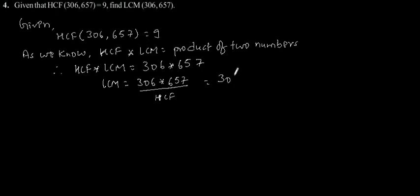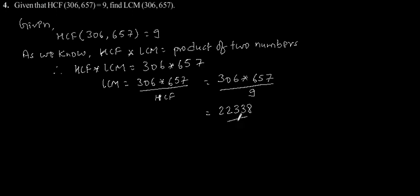You will get 306 into 657 divided by 9, which is equal to 22338. So the LCM of 306 and 657 is 22338.